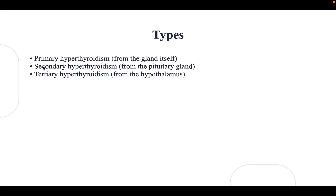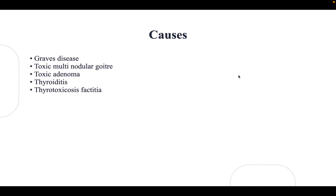There are three types: primary, secondary, and tertiary hyperthyroidism. Primary is from the gland itself, secondary is from the pituitary, and tertiary is from the hypothalamus. The causes include Graves' disease, toxic multinodular goiter, toxic adenoma, thyroiditis, and thyrotoxicosis factitia.